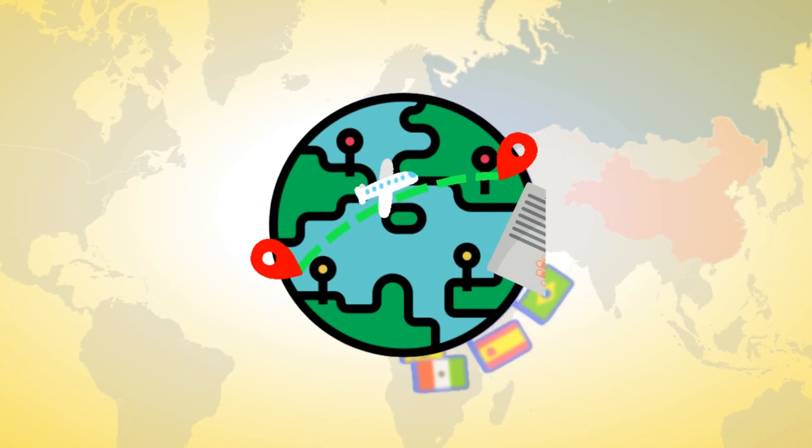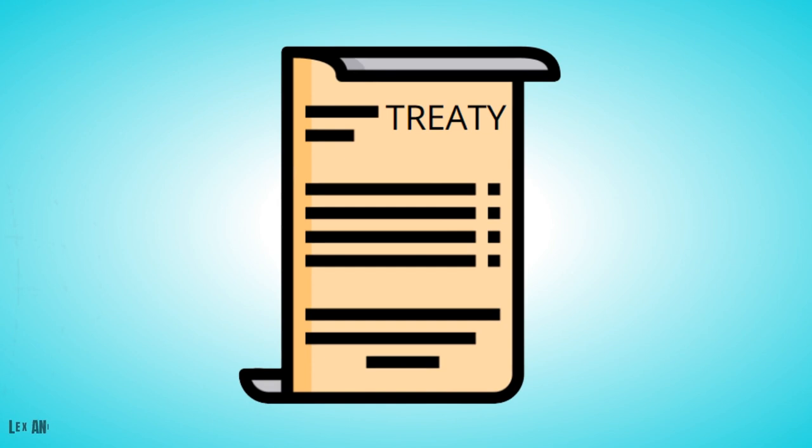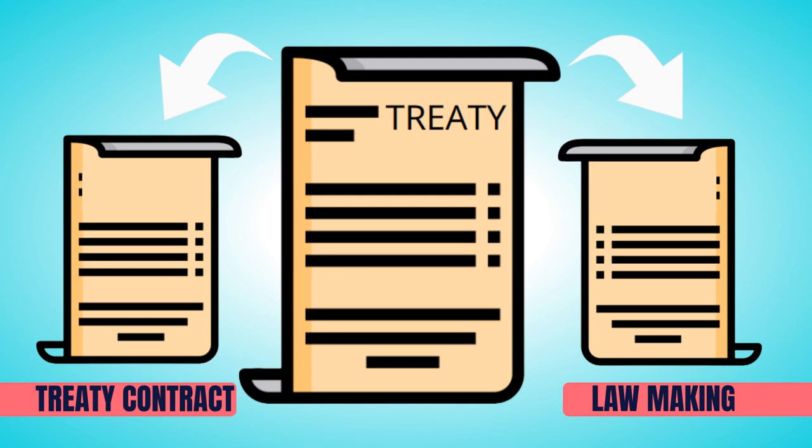A treaty may cover a broad range of issues between countries, as almost everything needs an international agreement to lay down the necessary conditions of operation. Treaties are divided based on the scope of application and the extent of responsibilities they impose into two main types.